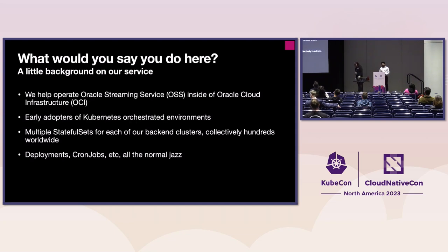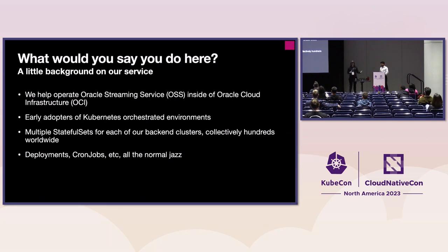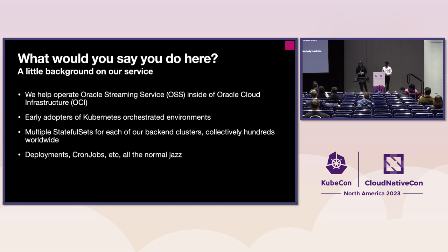Israel and I work in OCI — that's the Oracle Cloud Infrastructure. We operate the service known as OSS, the Oracle Streaming Service. Much like Kinesis on AWS, we offer a fully scalable streaming environment that customers can use for all of their data-in-motion real-time use cases. Behind the scenes, it's run on top of Kubernetes with a lot of stateful sets. We deal with customers' data and we take that very, very seriously. When we're talking about scale, we're talking about maintaining uptime and availability of these back-end systems and the sheer number of regions that we offer our service in.